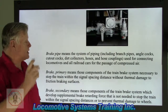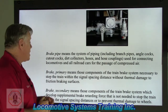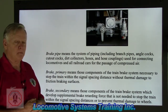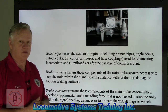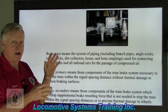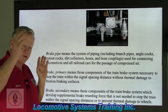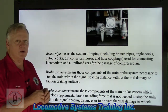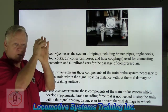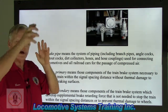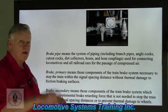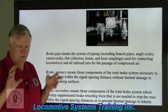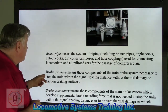Brake pipe means the system of piping including branch pipes, angle cocks, cut-out cocks, dirt collectors, hoses, and hose couplings used for connecting locomotives and all railroad cars for the passage of compressed air. Even after 40 years in the railroad industry, I marvel looking at a train going down the track — from that lead locomotive through all the cars to the last car or EOT device. Brake pipe air runs the entire length of that train, because brake pipe air is the air signal for both locomotive operation and automatic brake operation on cars.